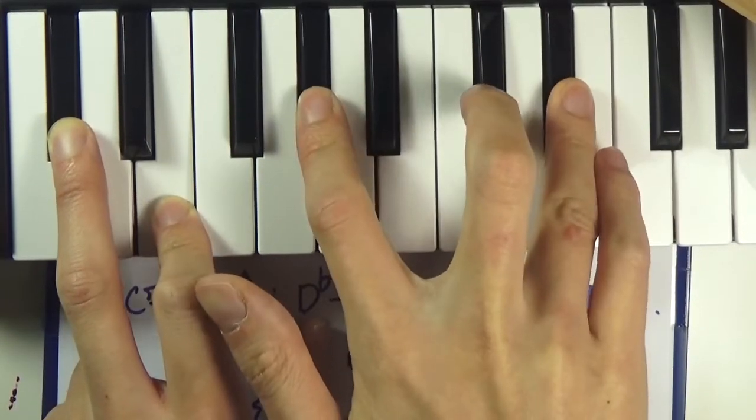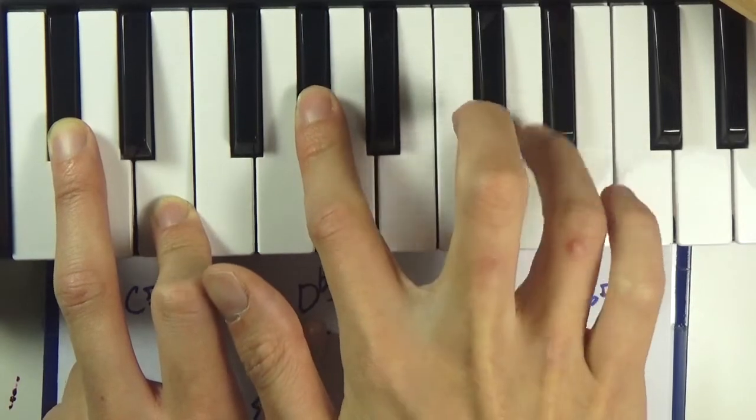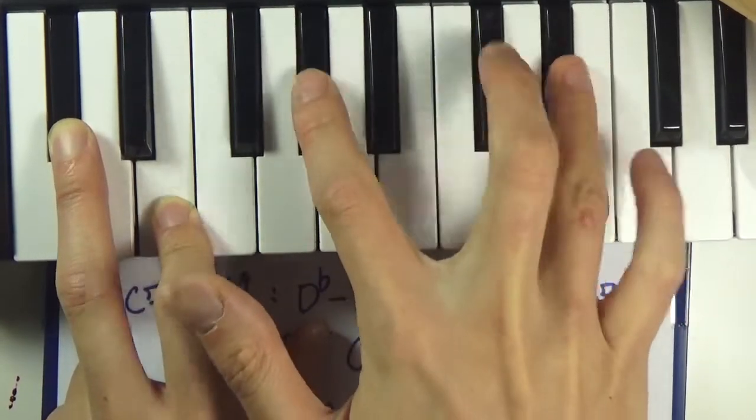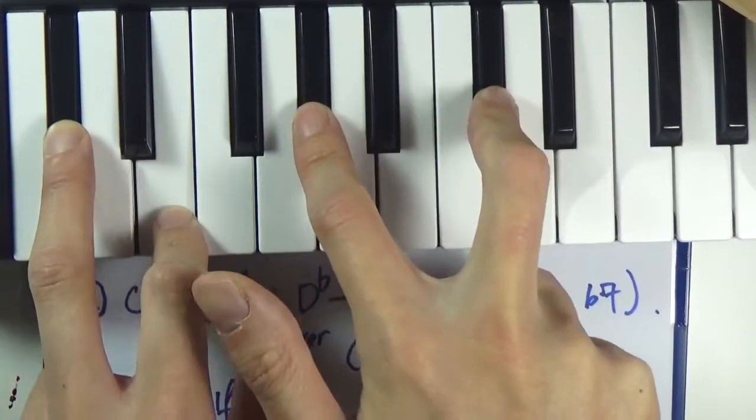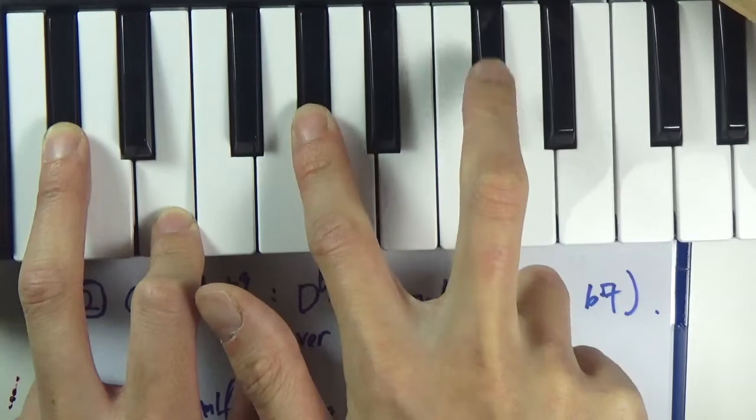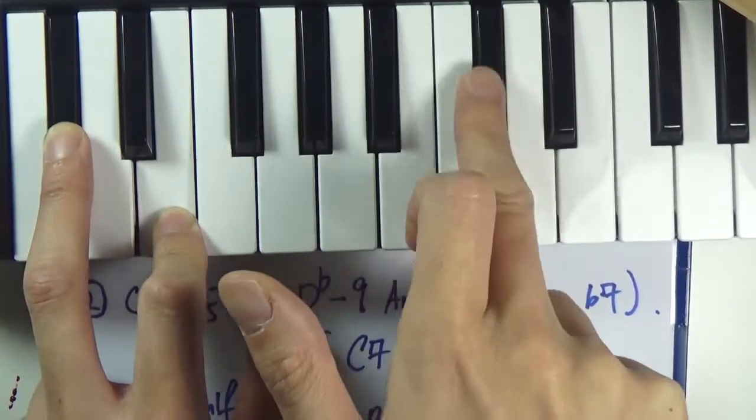And then the flat nine here is really the root of D-flat. So D-flat is really the flat nine of C. If I put it down on paper, it would look something like this.